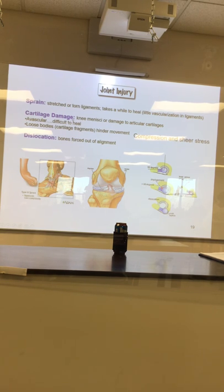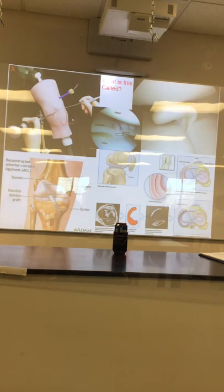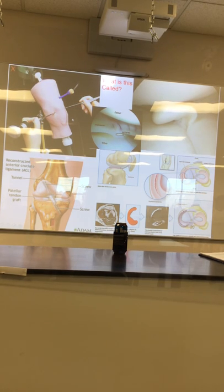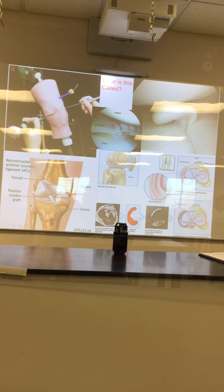We've talked about dislocations. What kind of surgery is this? Arthroscopic — to scope a joint. You'll have an irrigation system to inflate the knee, a small camera, and a tool coming in from the other side to do work inside the knee.